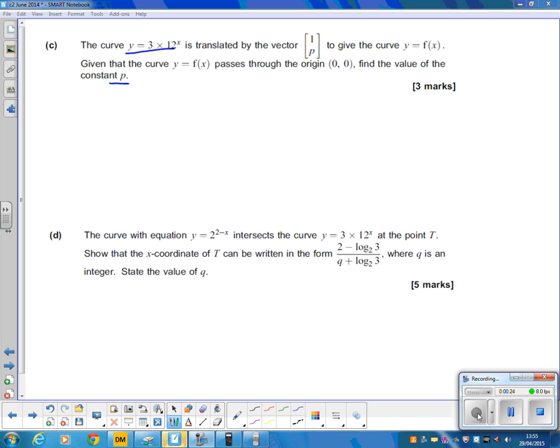So the first thing we're going to do is apply this transformation. If we're translating by a vector, we take the value in the y direction away from y and the value in the x direction away from x. So y minus p equals 3 times 12 to the x minus 1. Rearranging, y equals 3 times 12 to the power of x minus 1 plus p. You can go straight to that step if you're confident.